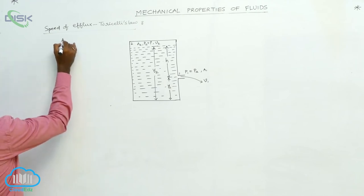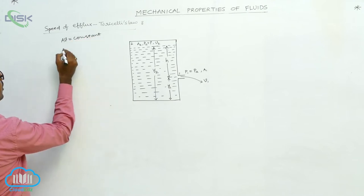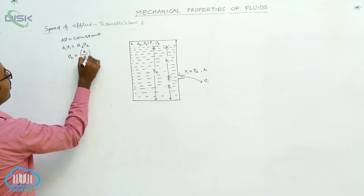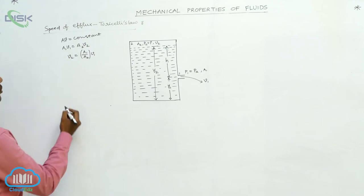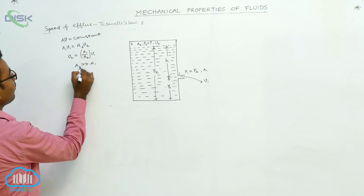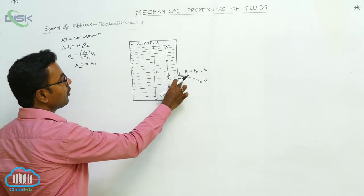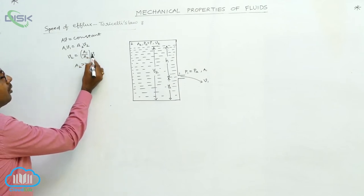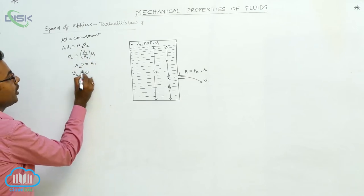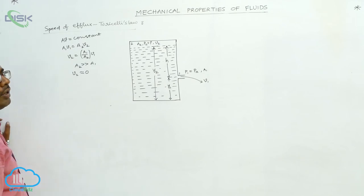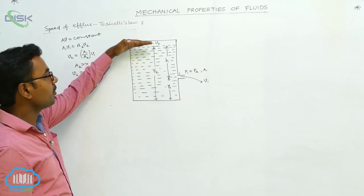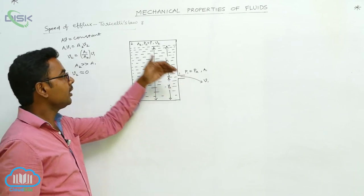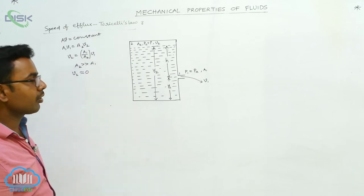We apply the equation of continuity: A1V1 = A2V2, so V2 = (A1/A2) × V1. Since A2 is much larger than A1, the ratio A1/A2 is very small, so V2 is also very small — V2 is approximately equal to 0. This makes physical sense: in daily life, when water comes out of a hole, the top surface of the water falls down very, very slowly, so V2 ≈ 0.